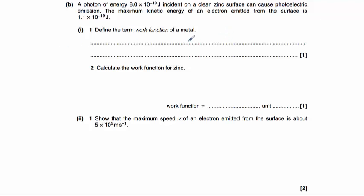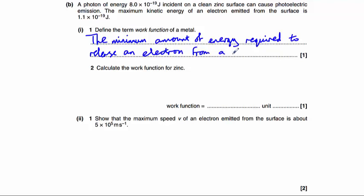To start with, we need to define the term work function of a metal. So the work function is the minimum amount of energy required to release an electron from a metal surface.